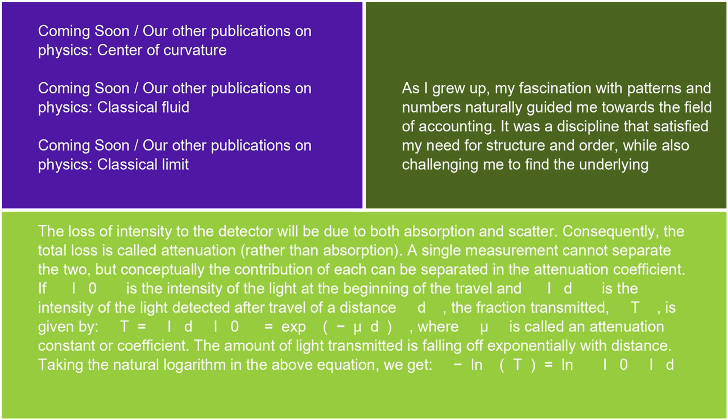A single measurement cannot separate the two, but conceptually the contribution of each can be separated in the attenuation coefficient. If I₀ is the intensity of the light at the beginning of the travel, and I_D is the intensity of the light detected after travel of a distance d, the fraction transmitted T is given by T = I_D/I₀ = exp(−μd), where μ is called an attenuation constant or coefficient.